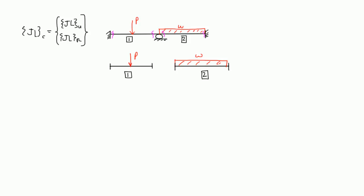Element 1 would bend in this manner, and element 2 would bend like this. So we draw the end reactions that cause this bending. If we have P going down, then the reactions are P over 2 and P over 2. The moment is drawn in the direction that causes this bending. Same thing on element 2 — we draw the moment in the direction that causes the bending, and the reactions on the ends go down.